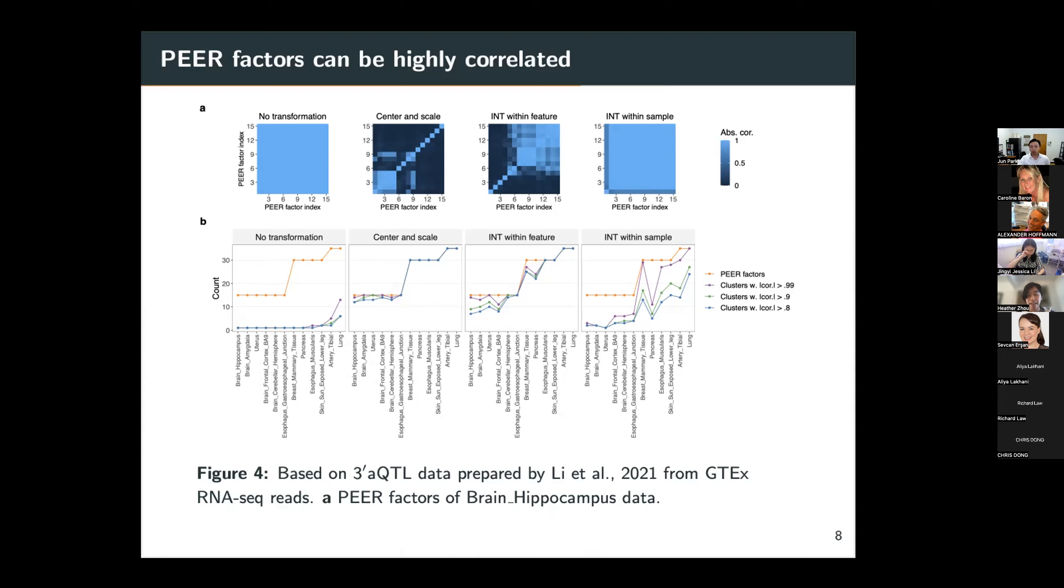The first one is when we don't transform the 3'APQTL phenotype data and directly run PEER using the number of PEER factors chosen by the authors. We found that in this case, the PEER factors are all identical to each other, which we can tell from the correlation heat map. If we center and scale the phenotype matrix first before running PEER, this issue is alleviated. If we transform the data by applying inverse normal transform within each feature, this issue is somewhat alleviated but still present, very much so.